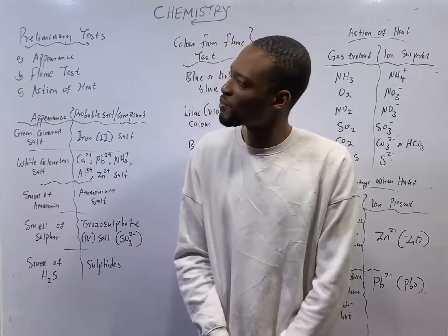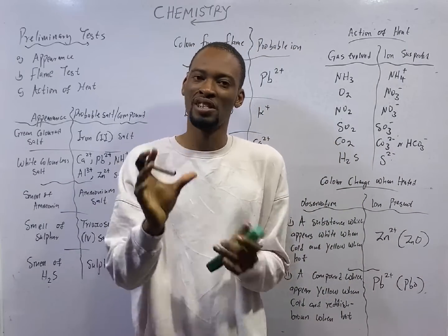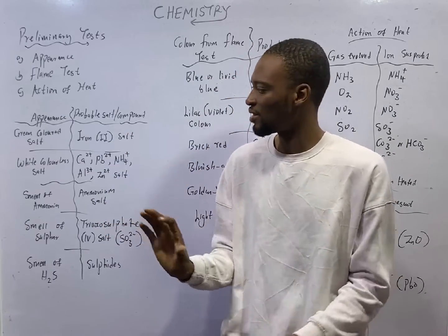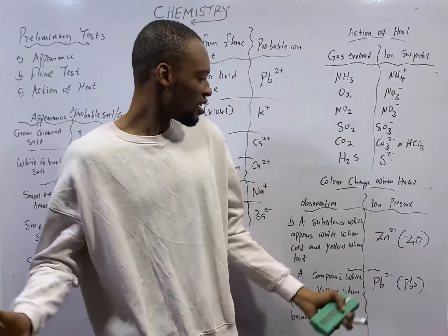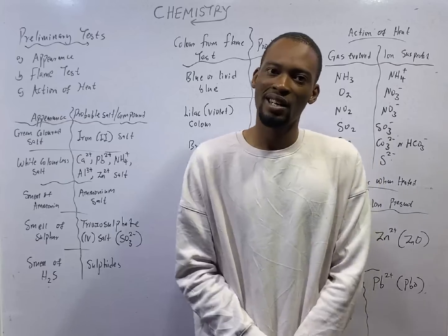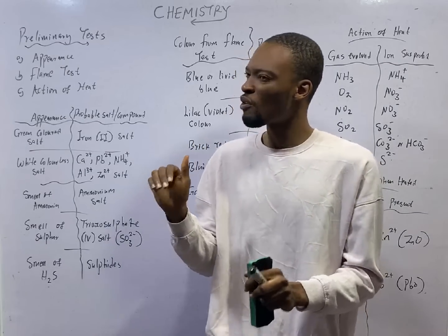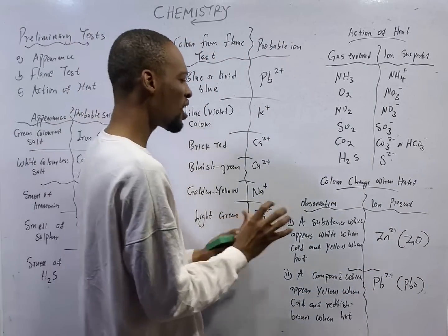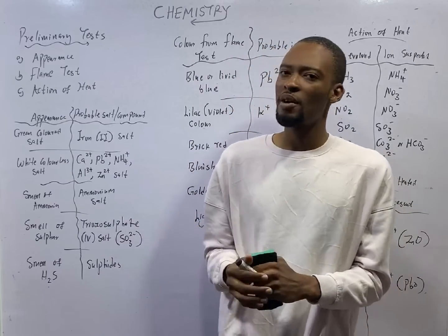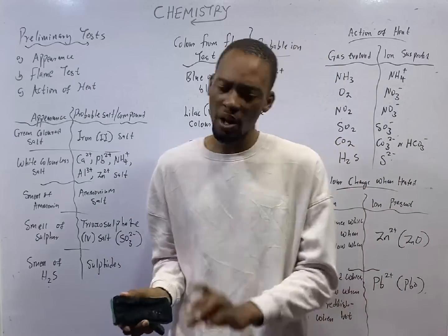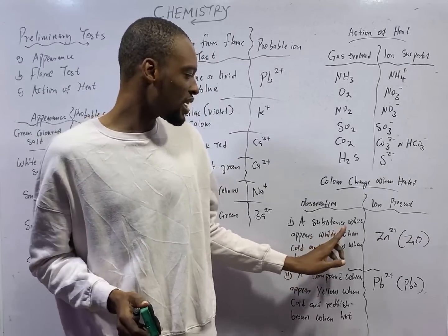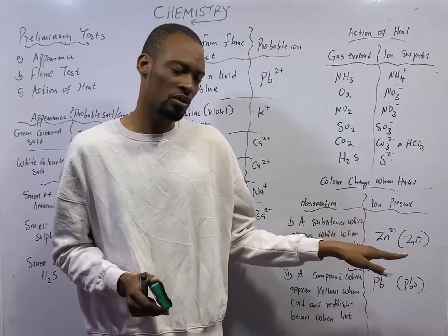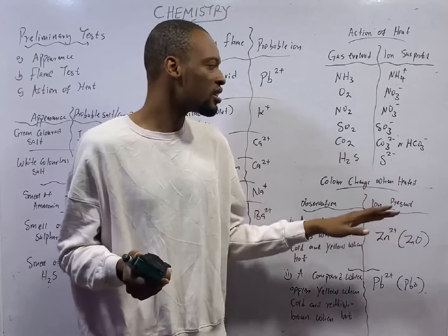This is episode number 42 of the 120 days to jam chemistry with Flash Isaac. In this episode, we shall be looking at preliminary tests. JAMB will ask you a question like: a substance which appears white when cold and yellow when hot is likely to be dashed. When you hear things like this, they are under preliminary tests. The ion present is zinc ion or the compound is zinc oxide.